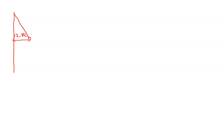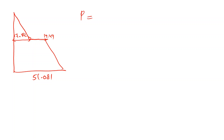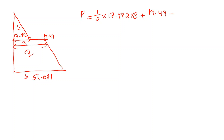Looking at the pressure diagram: the top is 0. Just above and below the interface the values are 17.882 and 19.49 respectively. At the bottom the pressure is around 15.882. The areas consist of a triangle with half into 17.92 into 3, plus a trapezoid with A plus B by 2 into the trapezoidal height.